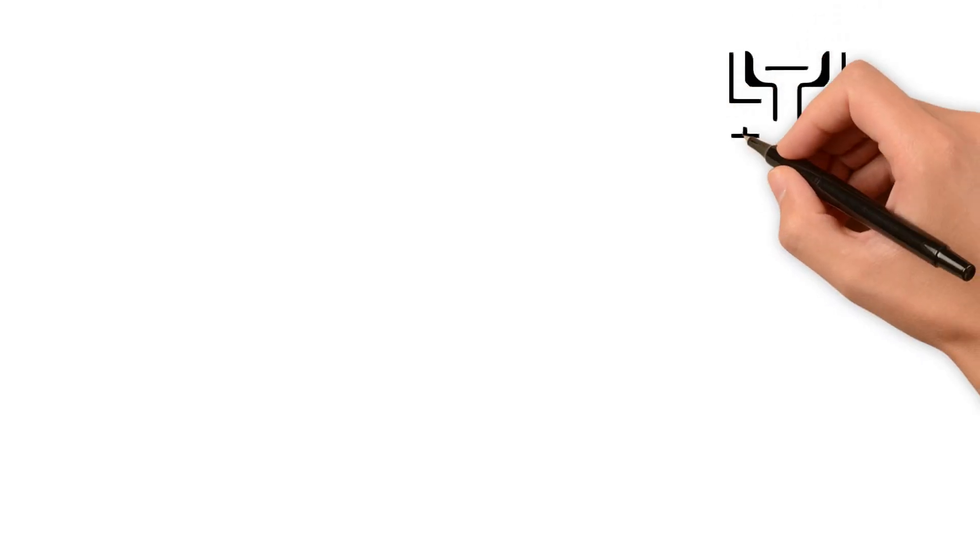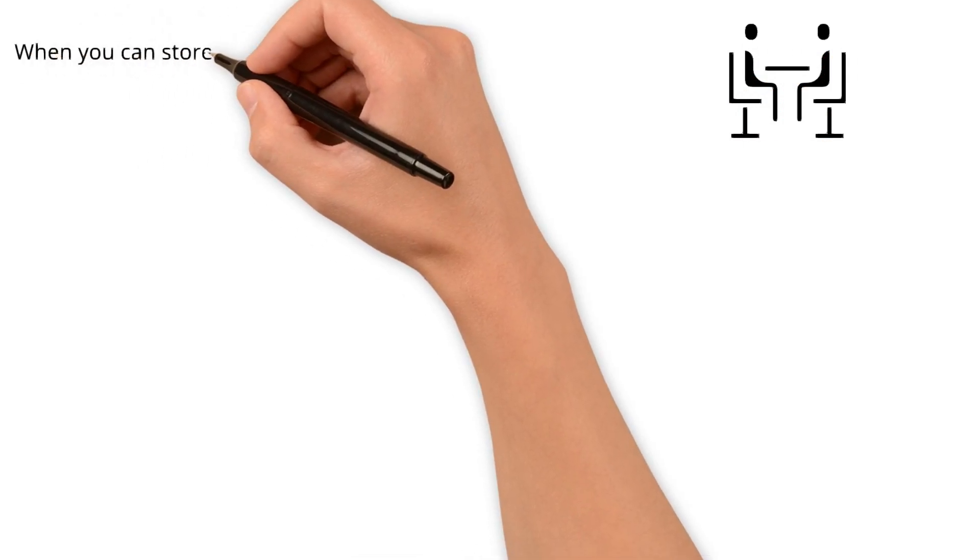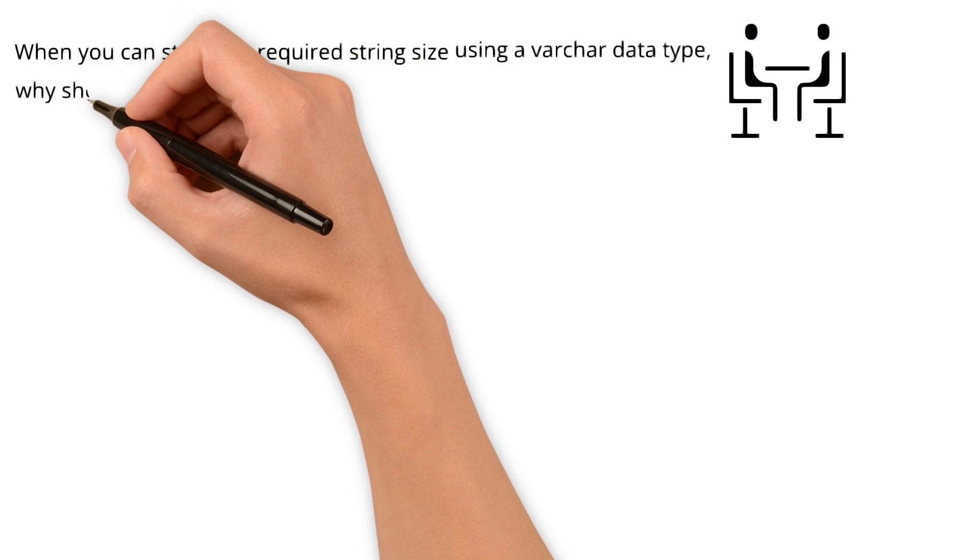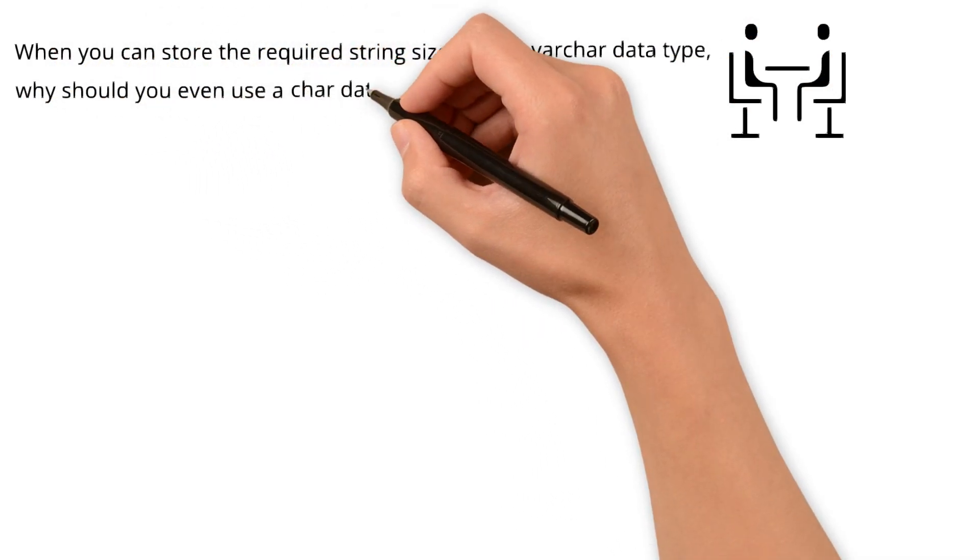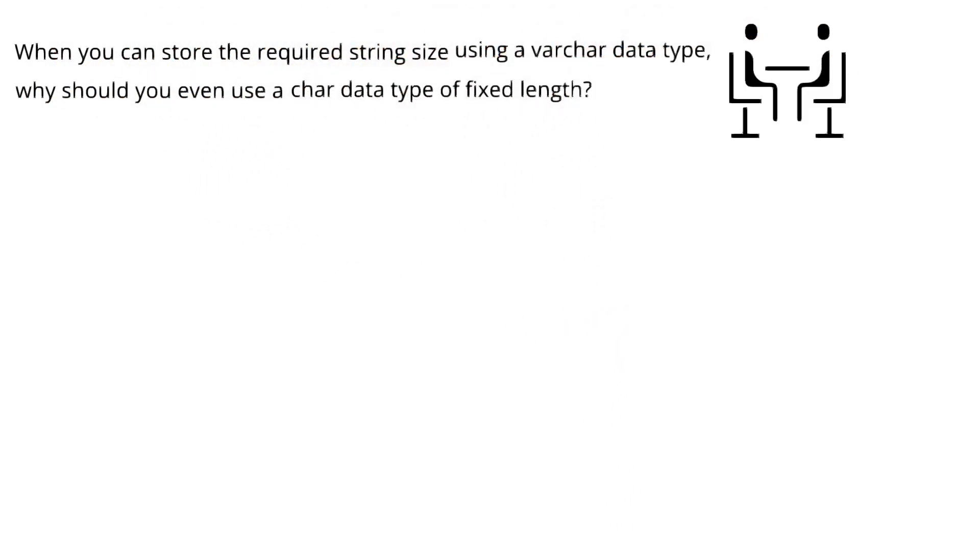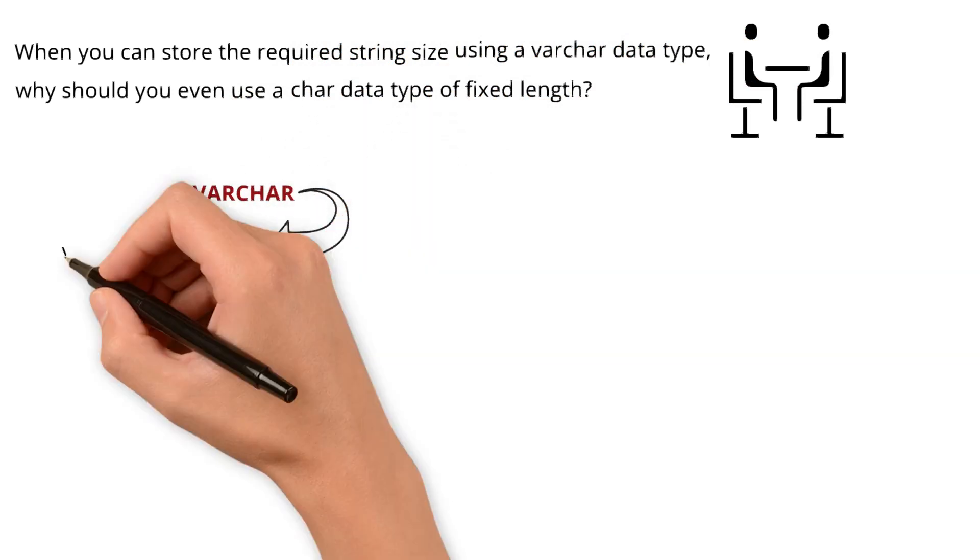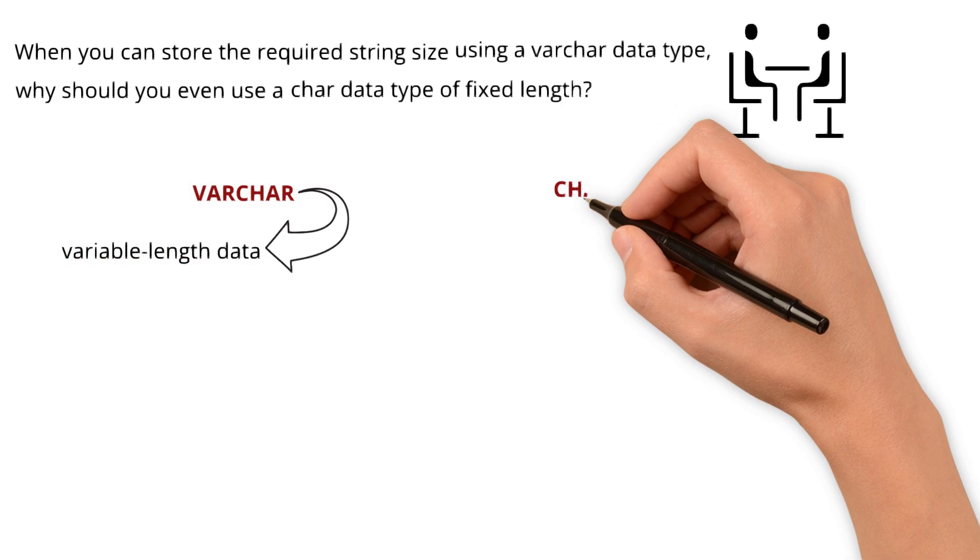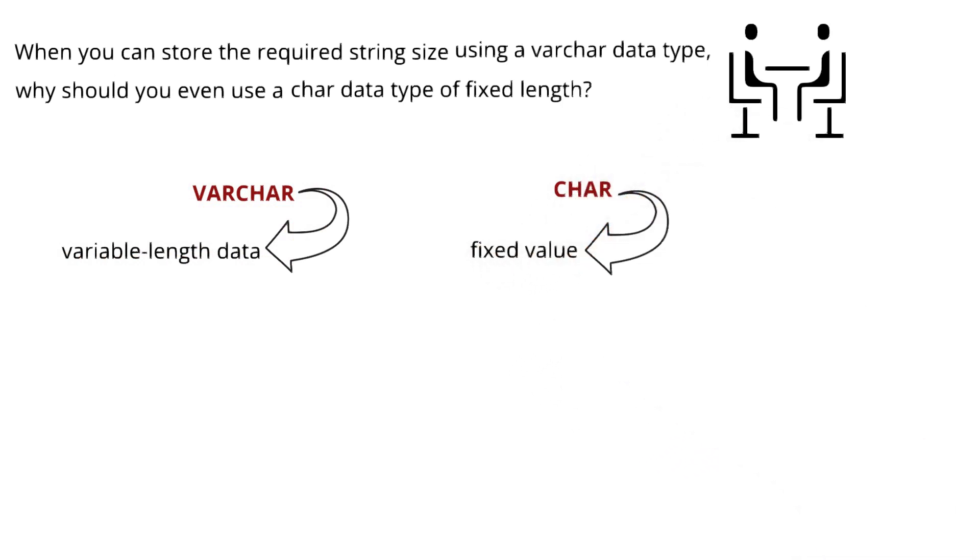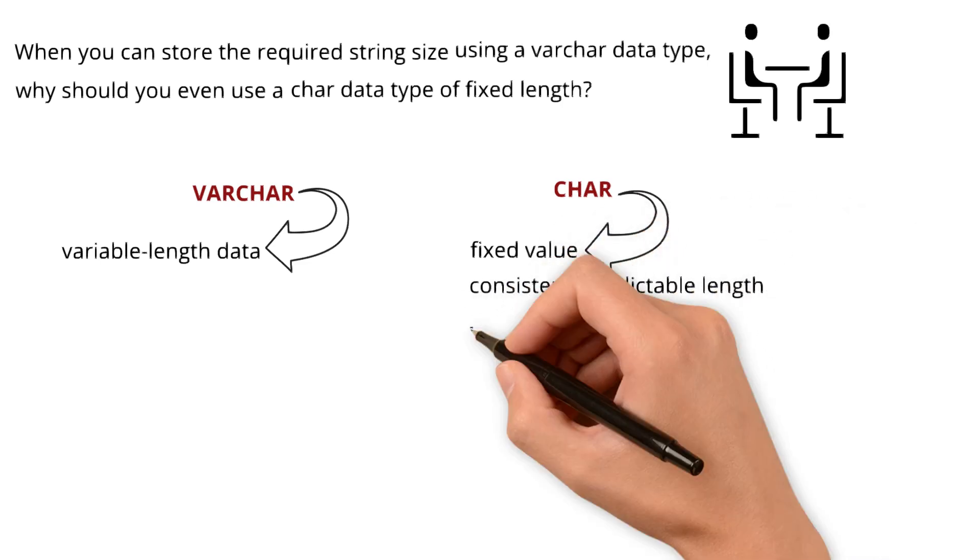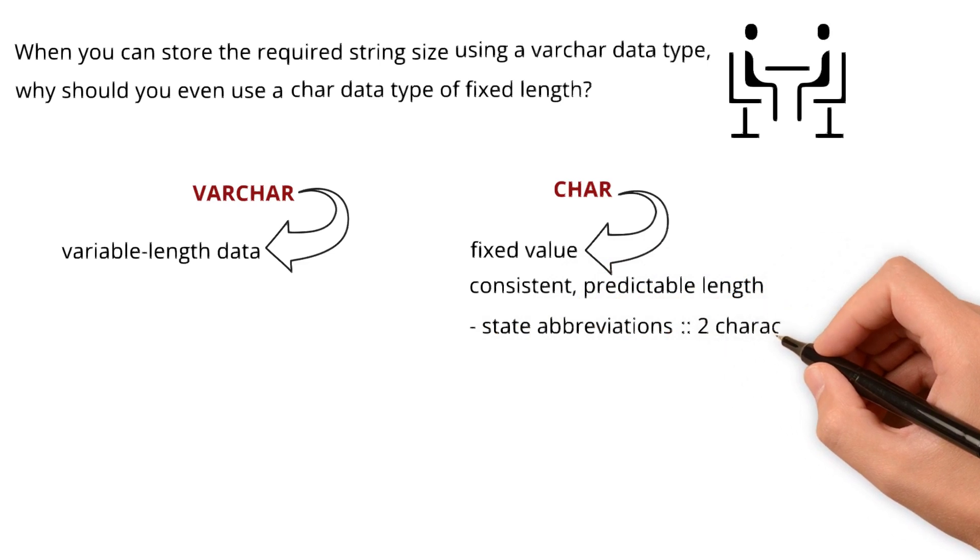One interview question here: When you can store the required string size using a VARCHAR data type, why should you even use a CHAR data type of fixed length? Well, while VARCHAR is more versatile for variable length data, CHAR still holds value in specific situations. When dealing with data that has a consistent, predictable length, like state abbreviations always two characters, and country codes always two letters.